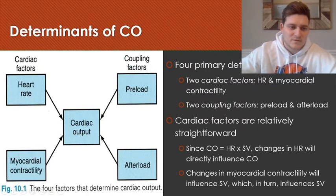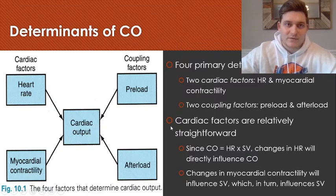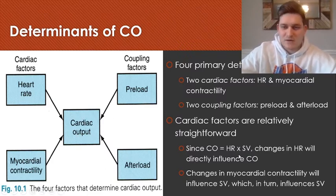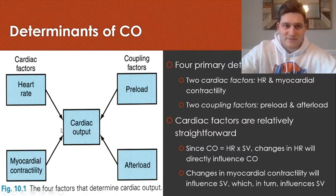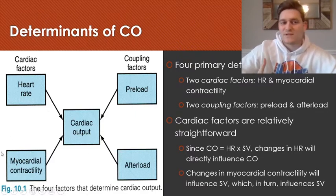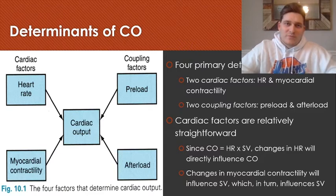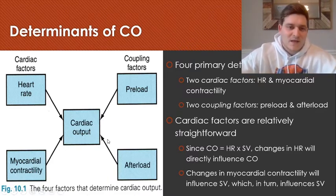In this figure, the four primary determinants are heart rate and myocardial contractility, which are known as the cardiac factors, and then we have the coupling factors which are preload and afterload. The cardiac factors are relatively straightforward. The formula for cardiac output is heart rate times stroke volume, so heart rate influences how much blood is ejected per minute. When myocardial contractility increases, the force of contraction goes up, pressures rise inside the ventricle during systole, increasing stroke volume and therefore cardiac output.